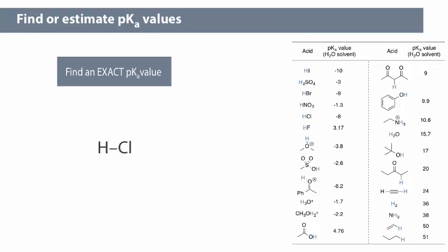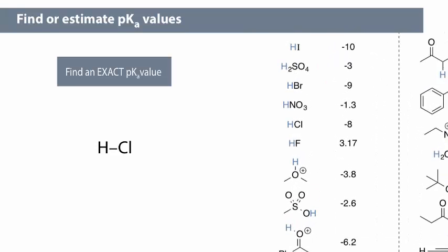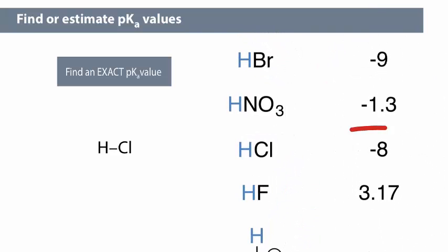For example, we can find the pKa value of hydrochloric acid by finding its formula, HCl, in the table, and reading across to find the pKa value of negative 8.